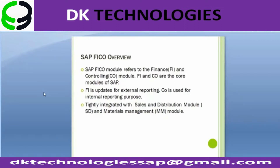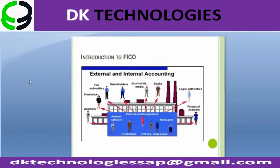The FICO module is tightly integrated with the Sales and Distribution module (SD) and the Material Management module (MM). FI and CO are two different sub-parts: FI is for external reporting purposes, whereas CO is for internal reporting purposes.